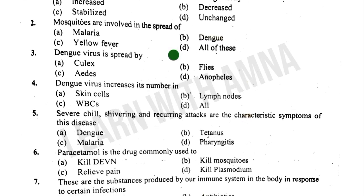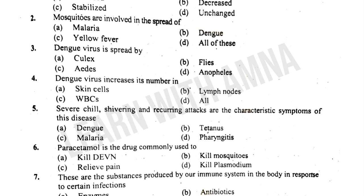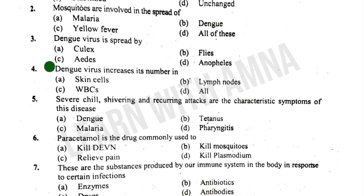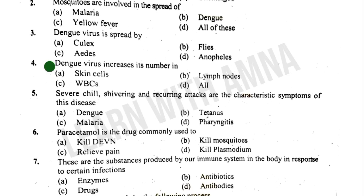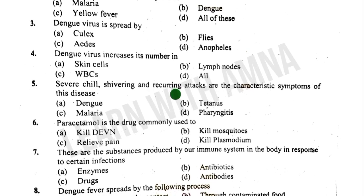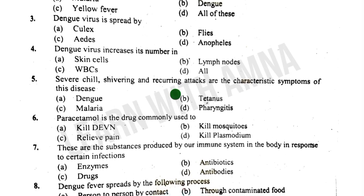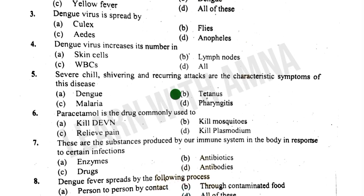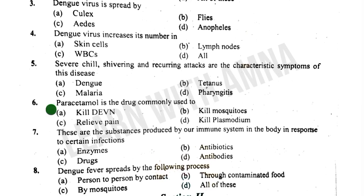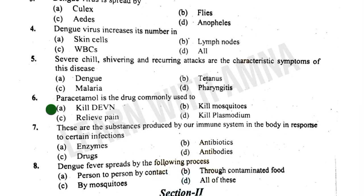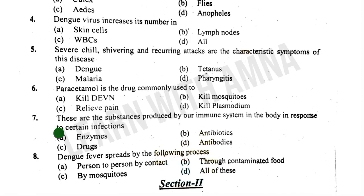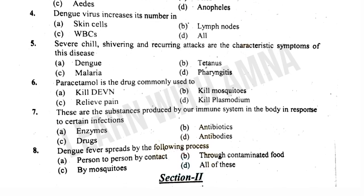Dengue virus is spread by — A) Alex flies. B) Flies. C) Aedes. D) Anopheles. The correct answer is Aedes. Dengue virus increases numbers in — A) Skin cells. B) Lymph nodes. C) WBCs. D) All. The correct answer is D. Severe chill, shivering, and recurring attacks are characteristic symptoms of — A) Dengue. B) Tetanus. C) Malaria. The correct answer is C. Paracetamol is commonly used to — A) Kill dengue. B) Kill mosquitoes. C) Relieve pain. D) Kill plasmodium. The correct answer is C. These are substances produced by our immune system in response to certain infections — A) Enzymes. B) Antibiotics. C) Drugs. D) Antibodies. The correct answer is D.